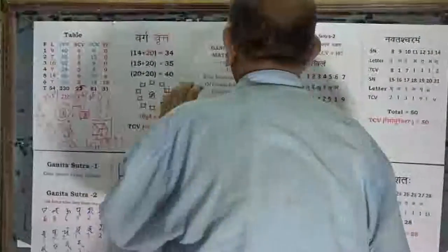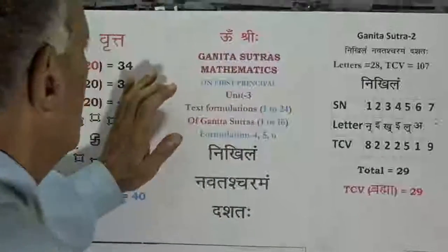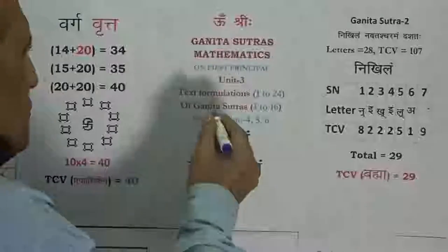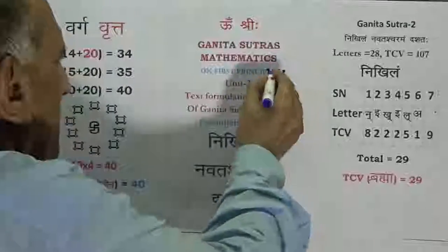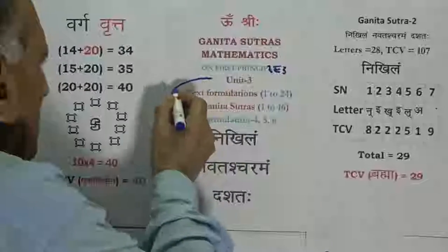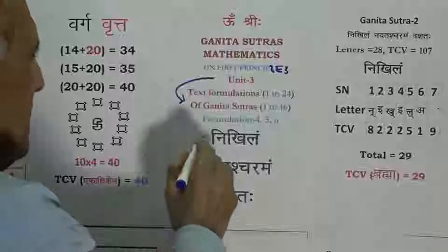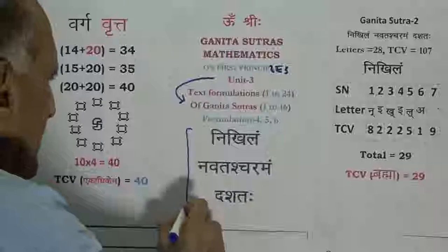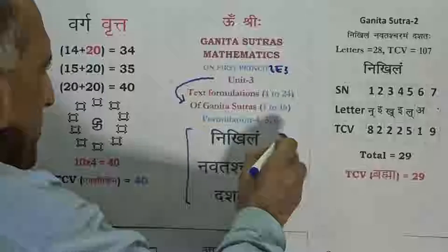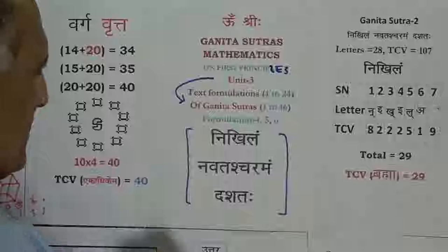Welcome to Vinita Sutra's Mathematics on First Principles Classes. We are in Unit 3, focusing upon the text formulations. Today the focus is upon formulations 4, 5 and 6. These formulations together make the text of Ganita Sutra 2.